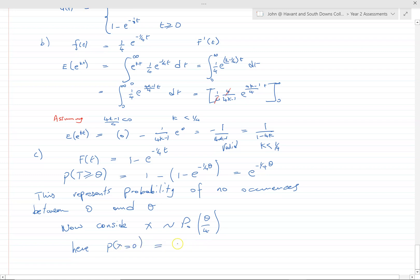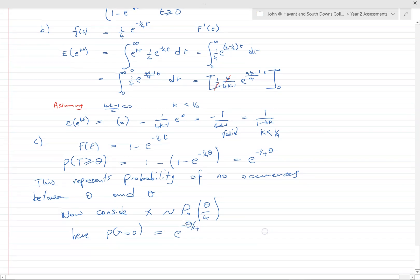Then here, the probability that x is equal to naught is equal to e to the minus λθ over 4, which is the same. These two are the same when λ is equal to θ over 4.